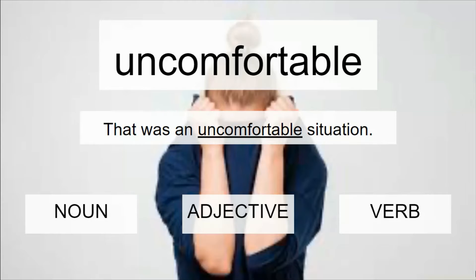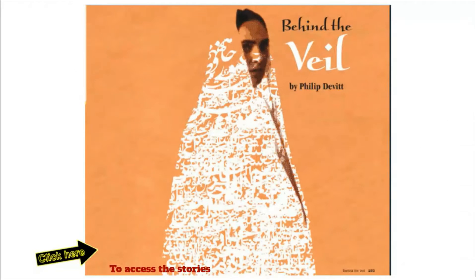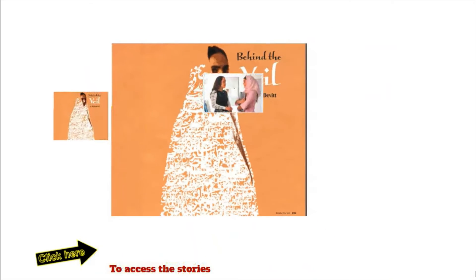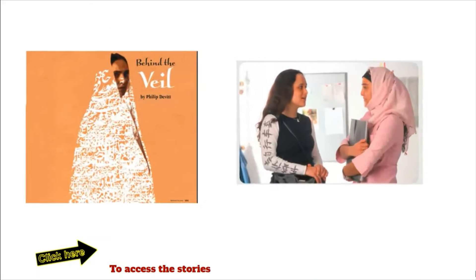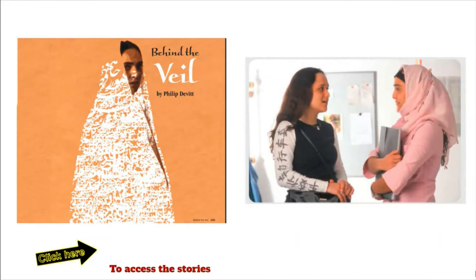That concludes our warm-up. Now, as mentioned, today we're going to be making text-to-text connections. We are going to read two different texts: 'Behind the Veil' and 'Different But Still Friends.' To access these stories, you will need to click on the link provided.